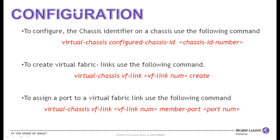To configure the chassis identifier on a chassis, use the following command: virtual chassis configured chassis id, followed by the chassis identifier number. To create virtual fabric links, use the following command: virtual chassis vf link, followed by the virtual fabric link number, then create.